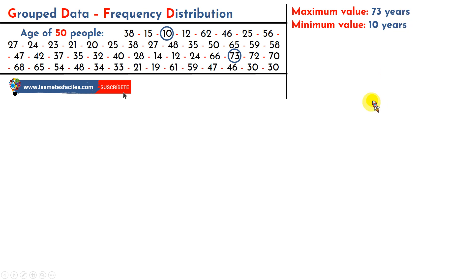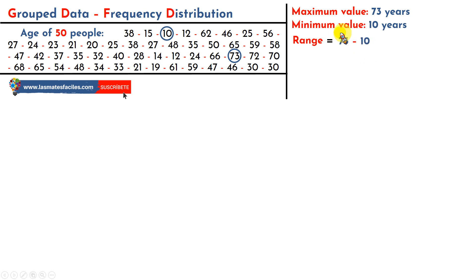Once these values are defined, we can now calculate the range. The range is very easy to calculate — we just need to subtract the minimum value from the maximum value. This means we have a range of 63 years between the youngest and the oldest.